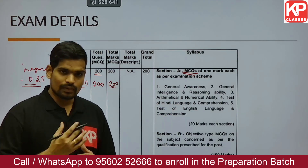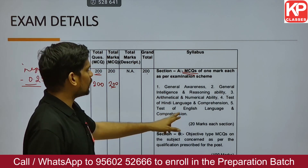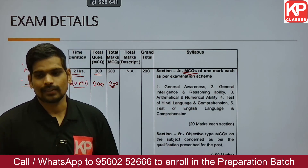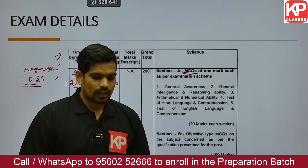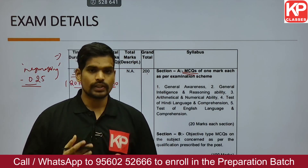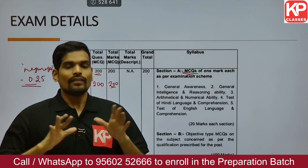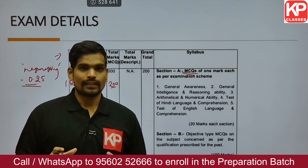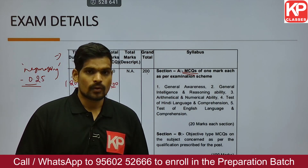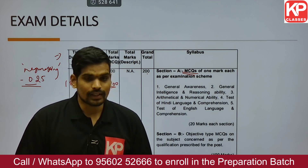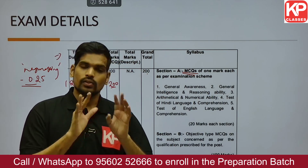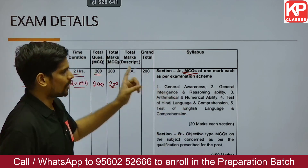The remaining topics in Section A are: Hindi Language and Comprehension (20 questions), English Language (20 questions), and Arithmetical and Numerical Ability (20 questions) — covering quant-based topics like profit and loss, speed and distance, and time and work. So Section A has 100 questions: 20 each from General Awareness, Reasoning, Numerical Ability, English, and Hindi.